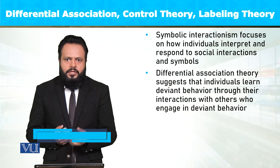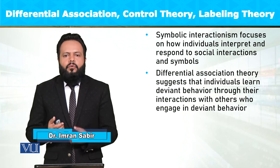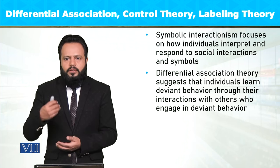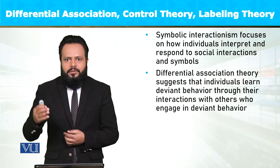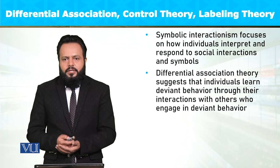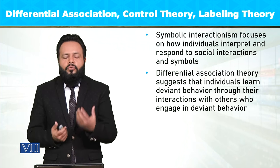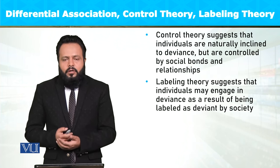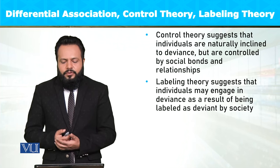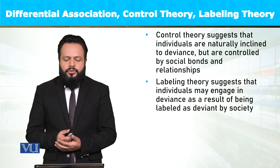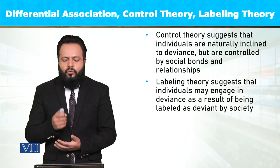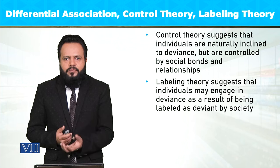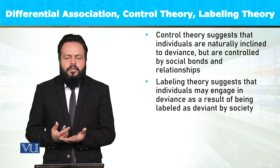Differential association theory claims that individuals who exhibit criminal or deviant behavior learn that behavior. They are controlled by social bonds and relationships, and the propensity to become deviant is considered natural within each human being.